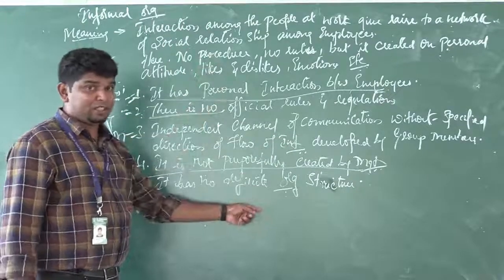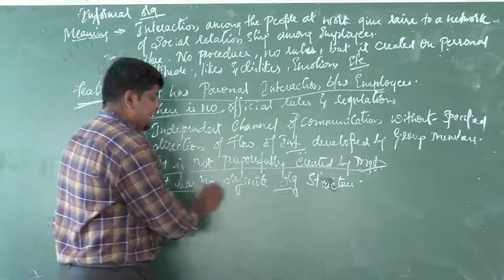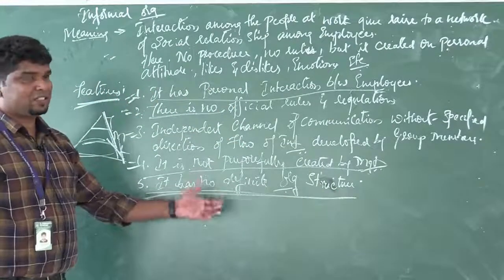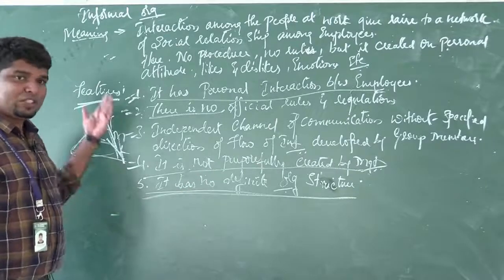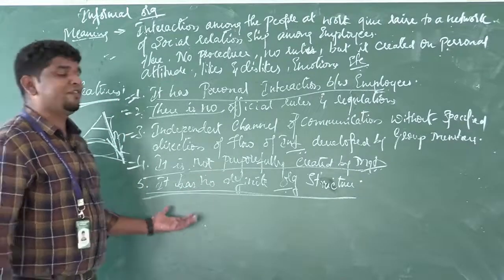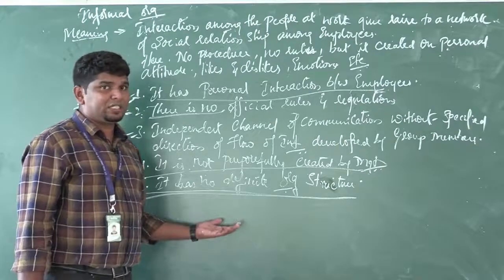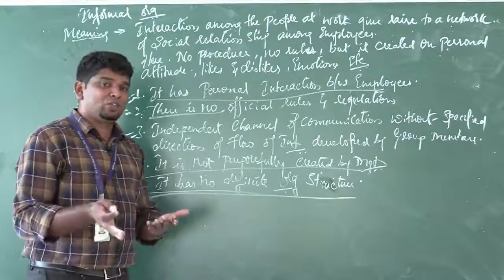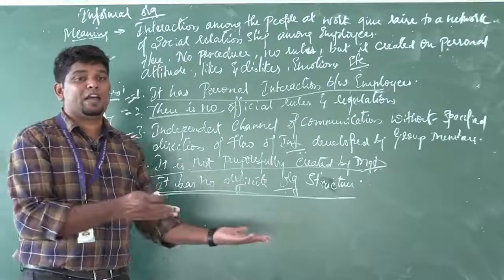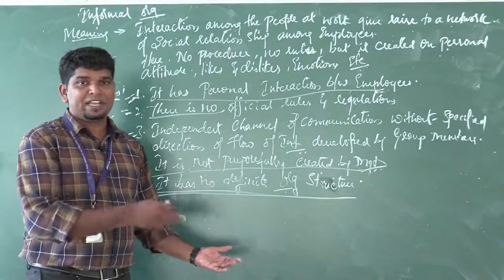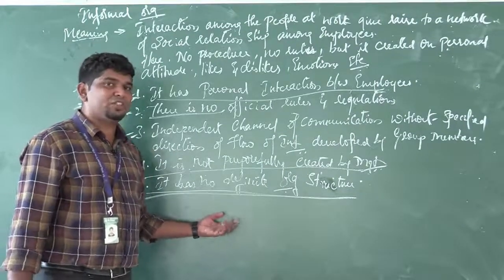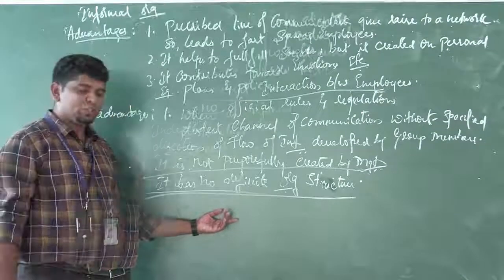Fifth feature: it has no definite organization structure. There is no scalar chain, no hierarchy, no definite structure. You may report to Mr. A today, Mr. B tomorrow, and Mr. C the day after. There is no clear-cut definite organizational structure in informal organization.